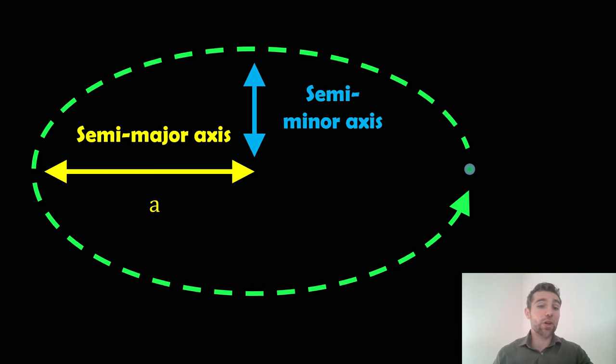For a circular orbit, that also correlates to the distance between the two objects because it doesn't change. So now we've got a, which is our semi-major axis. That's a key orbital parameter.